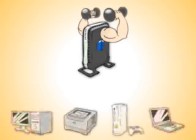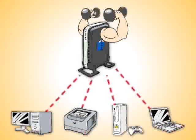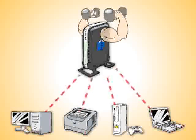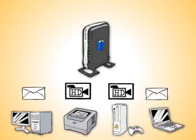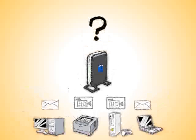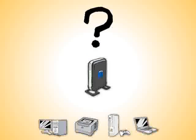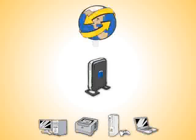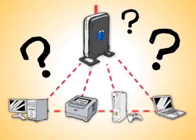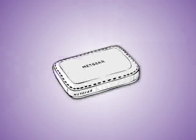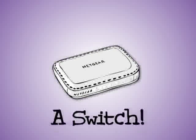A router is always at work, managing the tons and tons of information your computers and devices send and receive, and controlling which computers and devices get what information and when. So how does a router actually send information from the internet to your computers and devices? And how does it enable your computers to share information with each other? The answer lies with that device we mentioned earlier — a switch.